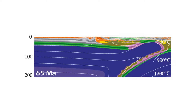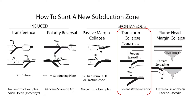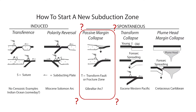New subduction zones can also form spontaneously without any compression, if there is a long enough lithospheric weakness and a large enough density contrast on either side of it. There are three ways for this to happen: transform or fracture zone collapse, plume margin collapse, and possibly passive margin collapse. Let's consider these one at a time.